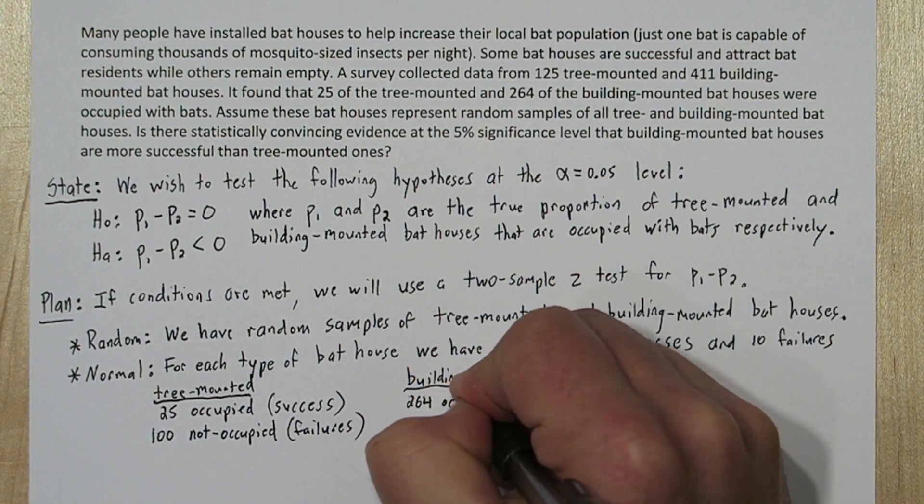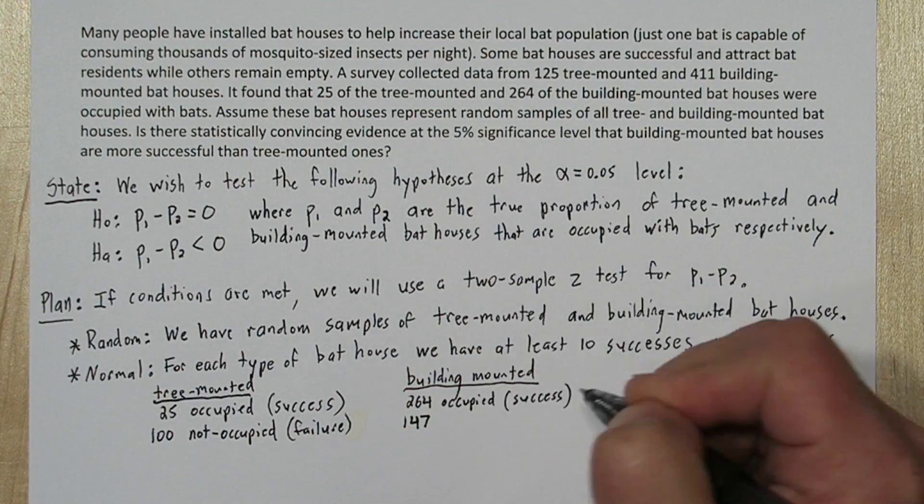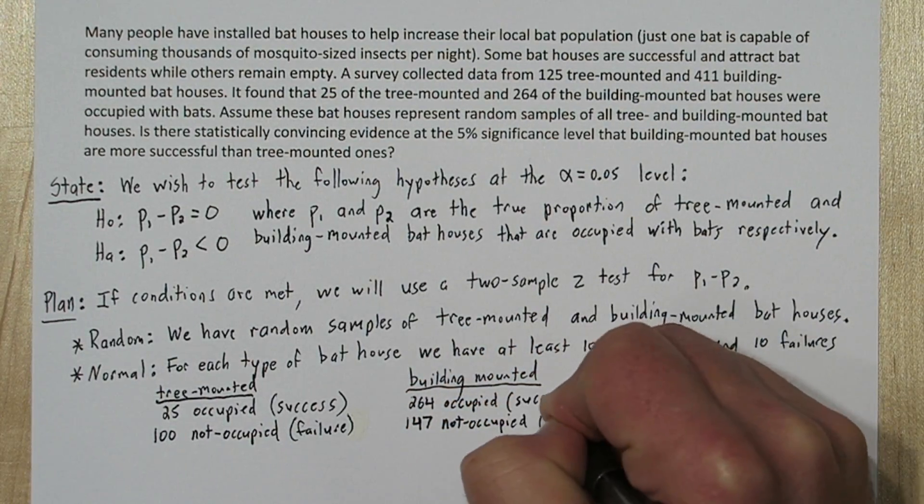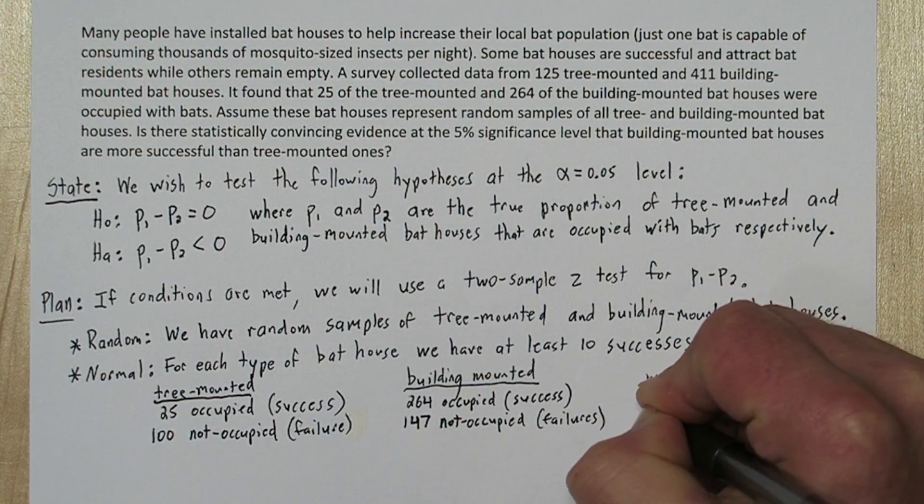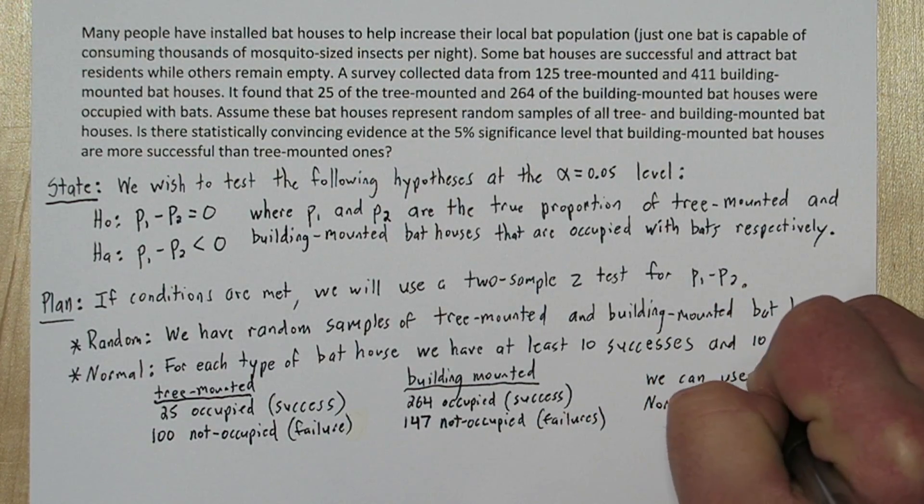For building-mounted, we had 264 occupied and 147 not occupied. Those values are also greater than 10. So since all the values are greater than 10, we can use normal calculations.